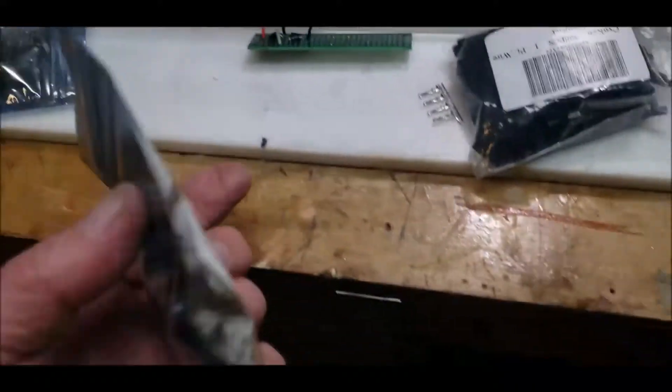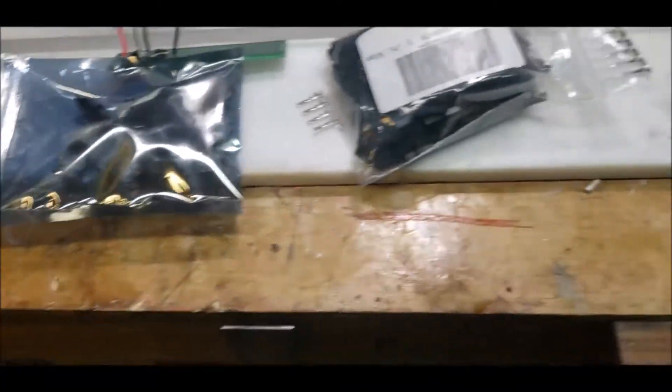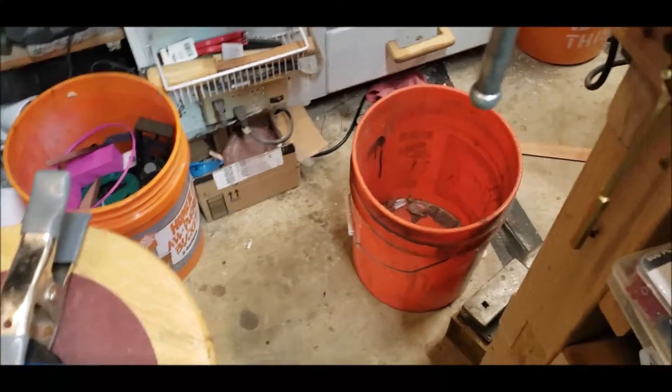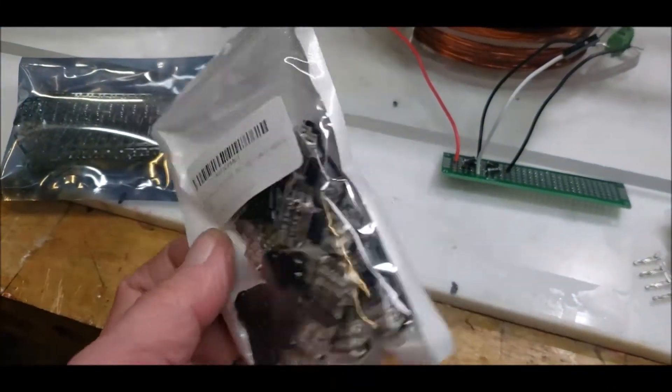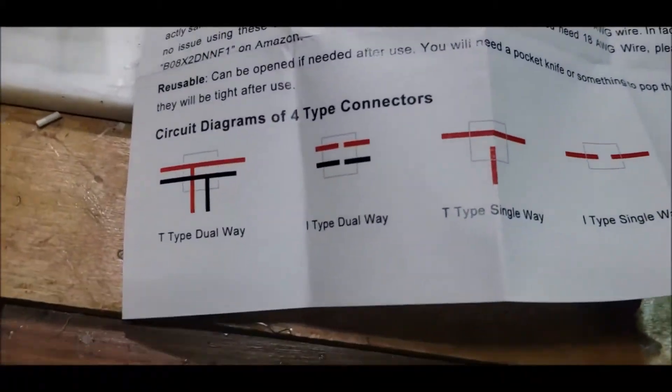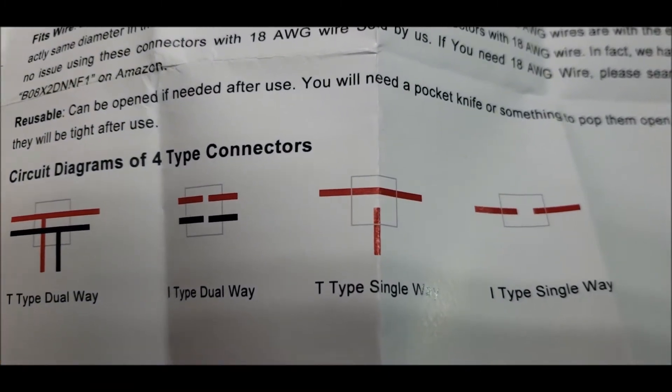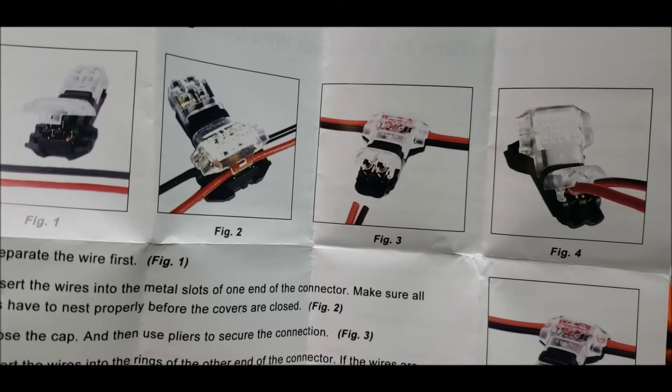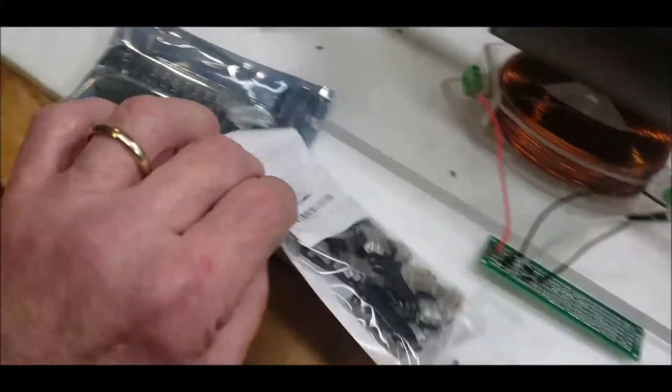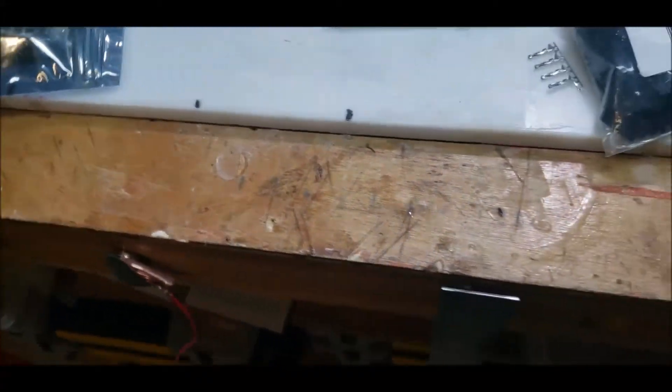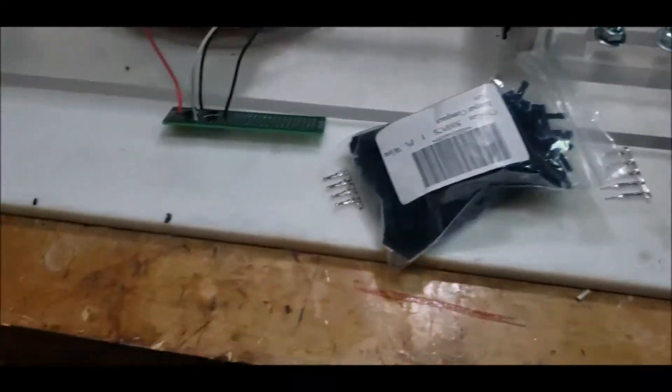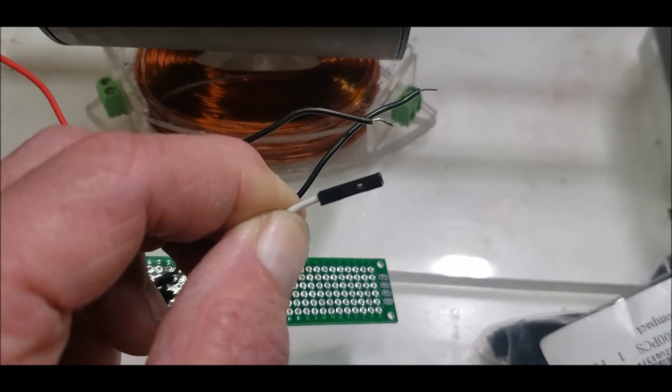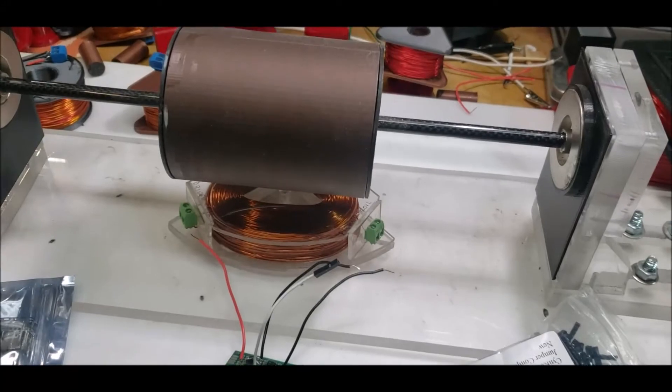And so these turned out to be not so, they're good for stranded wire. They're not good for the solid copper wire that I'm using. I tried messing with these. I also got these, which are T connectors. So with the T connectors, you can connect them either like that, a dual way, a single way. You just put the wire right in there and clamp on it and it cuts into it. Anyway, just thought I'd share that.